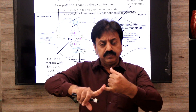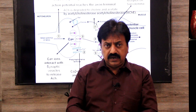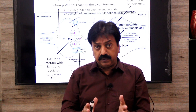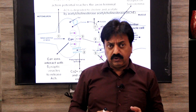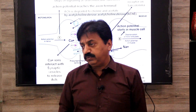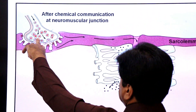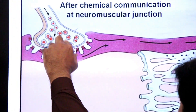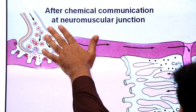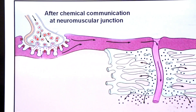To control muscle contraction, remember three important points: number one, release of calcium ions; number two, two regulatory proteins — tropomyosin and troponin — and the role calcium ions play with these proteins. After chemical communication at the neuromuscular junction is established, what happens next?